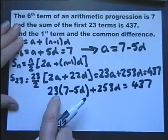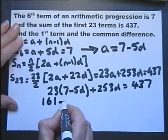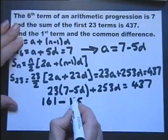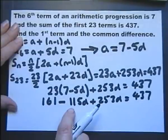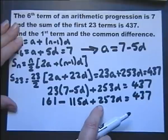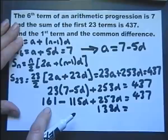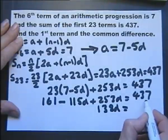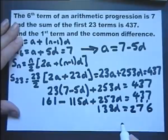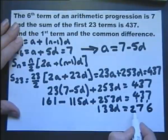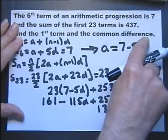Removing the brackets: 23 times 7 is 161, and 23 times 5 is 115. So we have 161 minus 115D plus 253D equals 437. Simplifying: 253D minus 115D gives 138D. Subtracting 161 from both sides gives 138D equals 276. Therefore D equals 2. That's the common difference found.